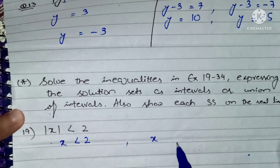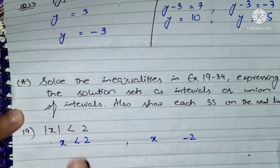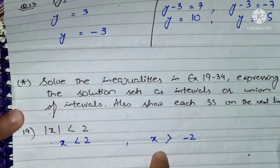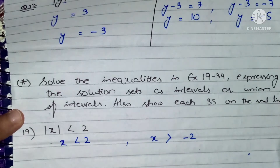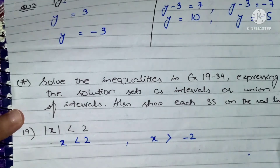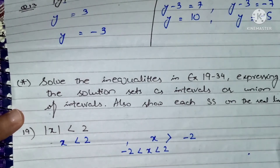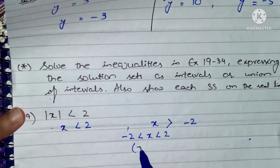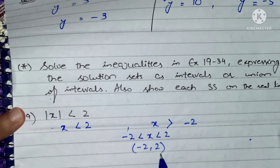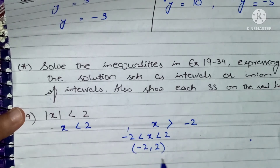When we write negative as well, we know that the equality sign — or greater, lesser, whatever sign — it will also switch. Now, we know that the interval will always move left to right, from smaller to greater. What is smaller? Minus two. What is greater? Two. So the interval will be minus two less than x less than two. The solution set will be the open interval (minus two, two).